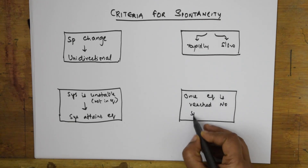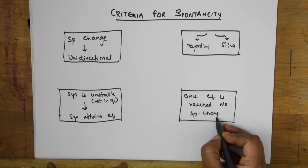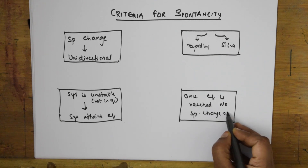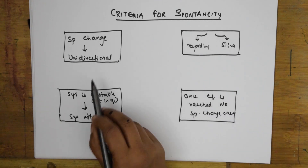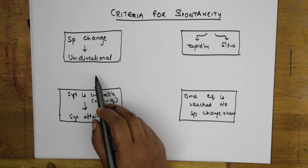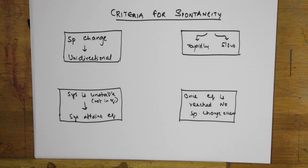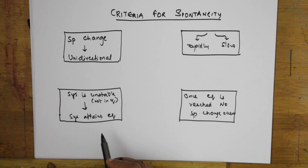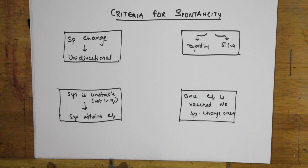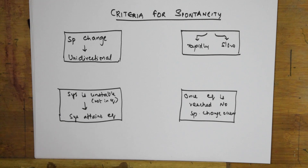So the fourth criteria: once the system attains equilibrium, it will not undergo any further spontaneous change. No spontaneous change occurs at equilibrium.